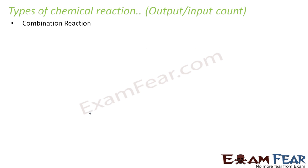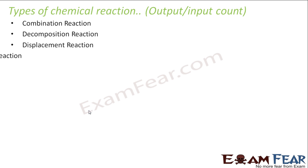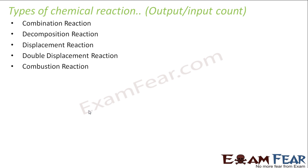Let's see the types of chemical reactions. Typically there are 5 types: the first is combination reaction, decomposition reaction, displacement reaction, double displacement reaction, and combustion reaction. There are other types also, but they fall within these 5 types.